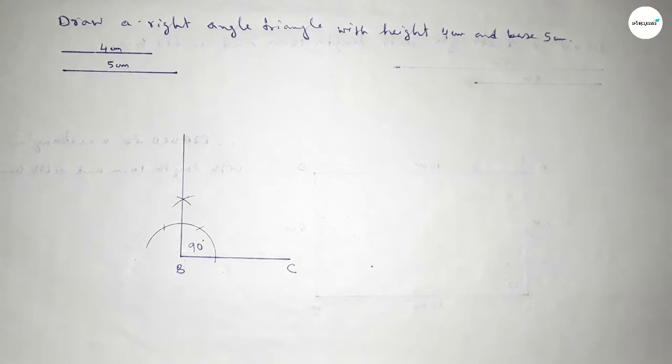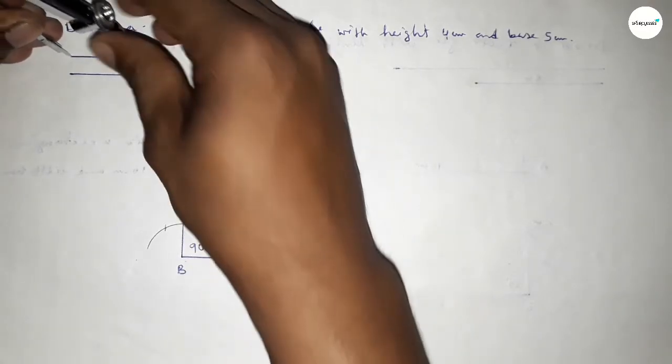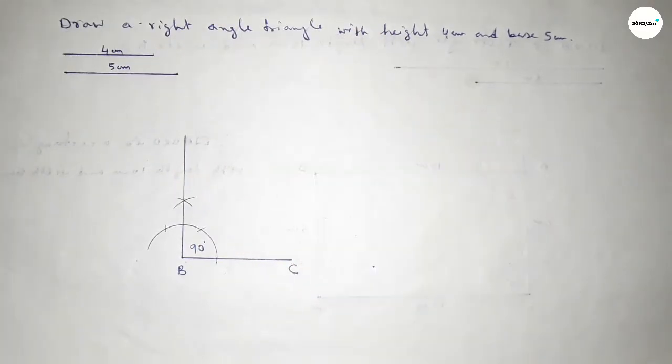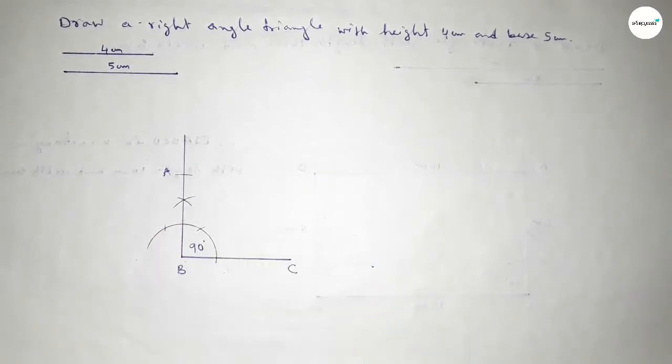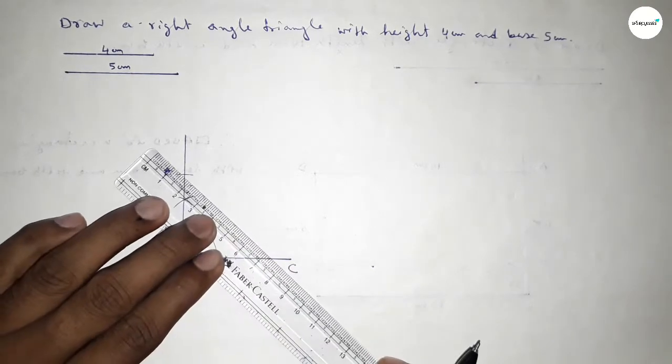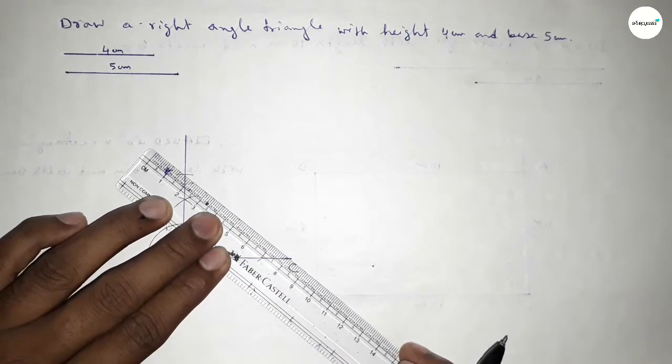Now taking the length of height 4 centimeters by using compass by this way, and putting the compass on point B and cut here. So taking here point A, now joining A and C to get the triangle ABC.